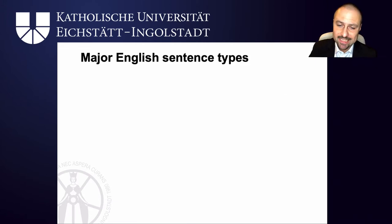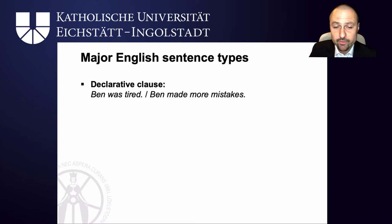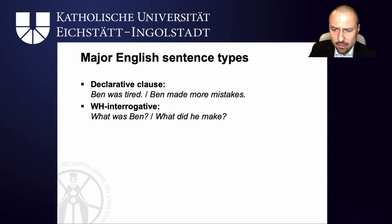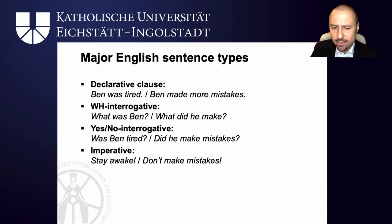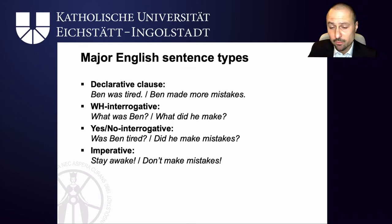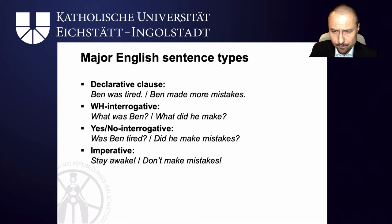What are the major sentence types of English? You've got declarative clauses like 'Ben was tired' and 'Ben made more mistakes', wh interrogatives like 'what was Ben' and 'what did he make', yes-no interrogatives like 'was Ben tired' and 'did he make mistakes', and imperatives like 'stay awake' and 'don't make mistakes'. There are more clause-level constructions, for example relative clauses, but we skip them for now. Let's focus on these four major sentence types in this presentation.